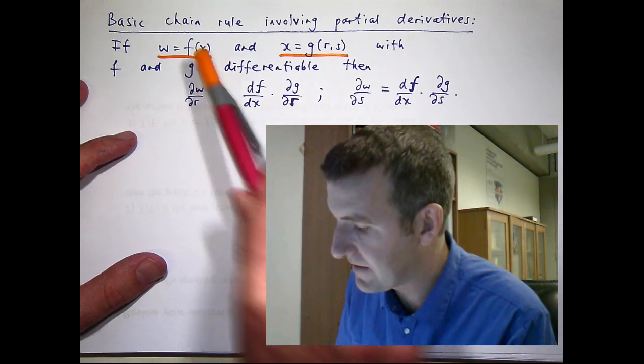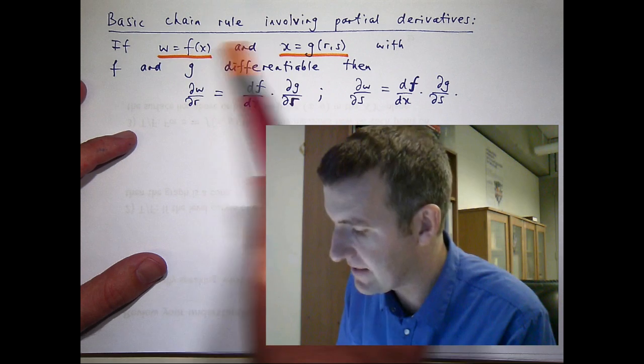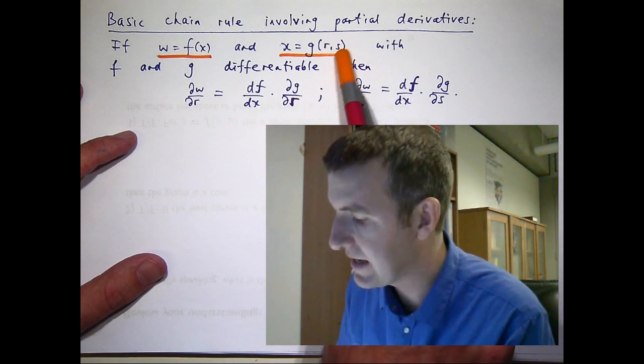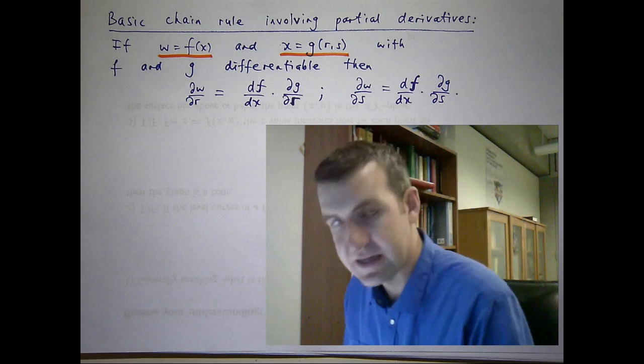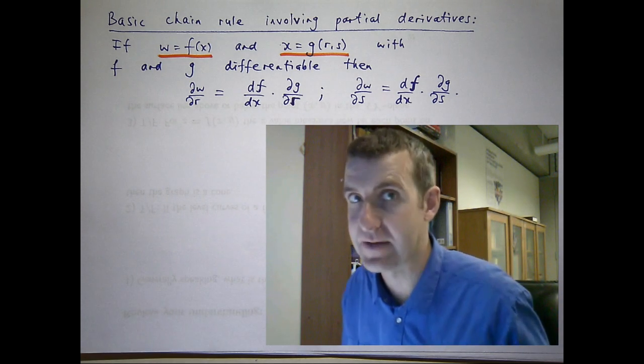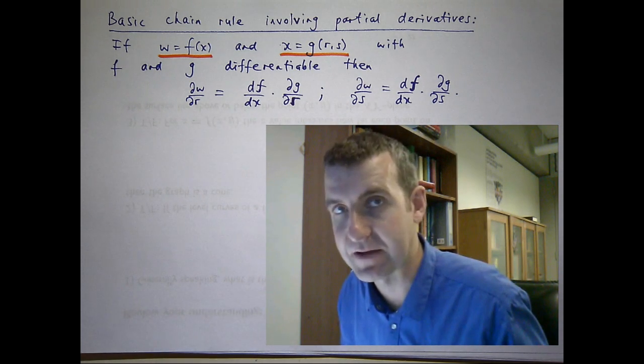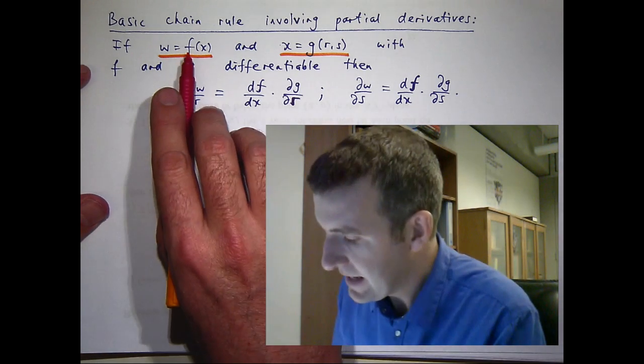Suppose w is a function of x, and that variable x is a function of two things, r and s. So you can think of x as an intermediate variable.